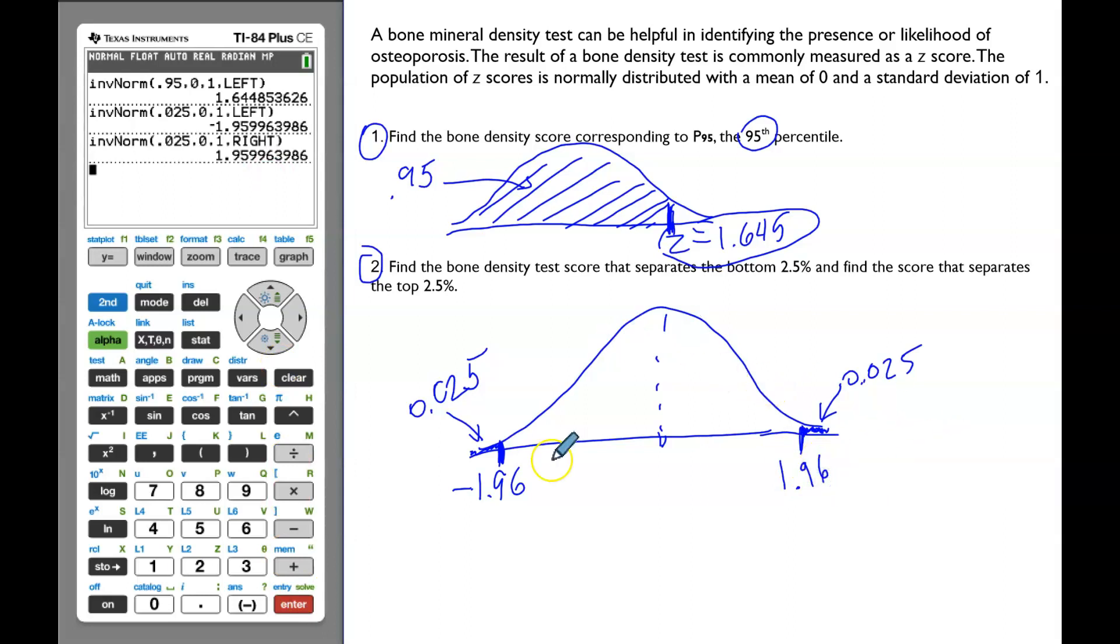That's because the graph of a normal distribution is symmetrical bell shape. I hope that was helpful. Thank you.